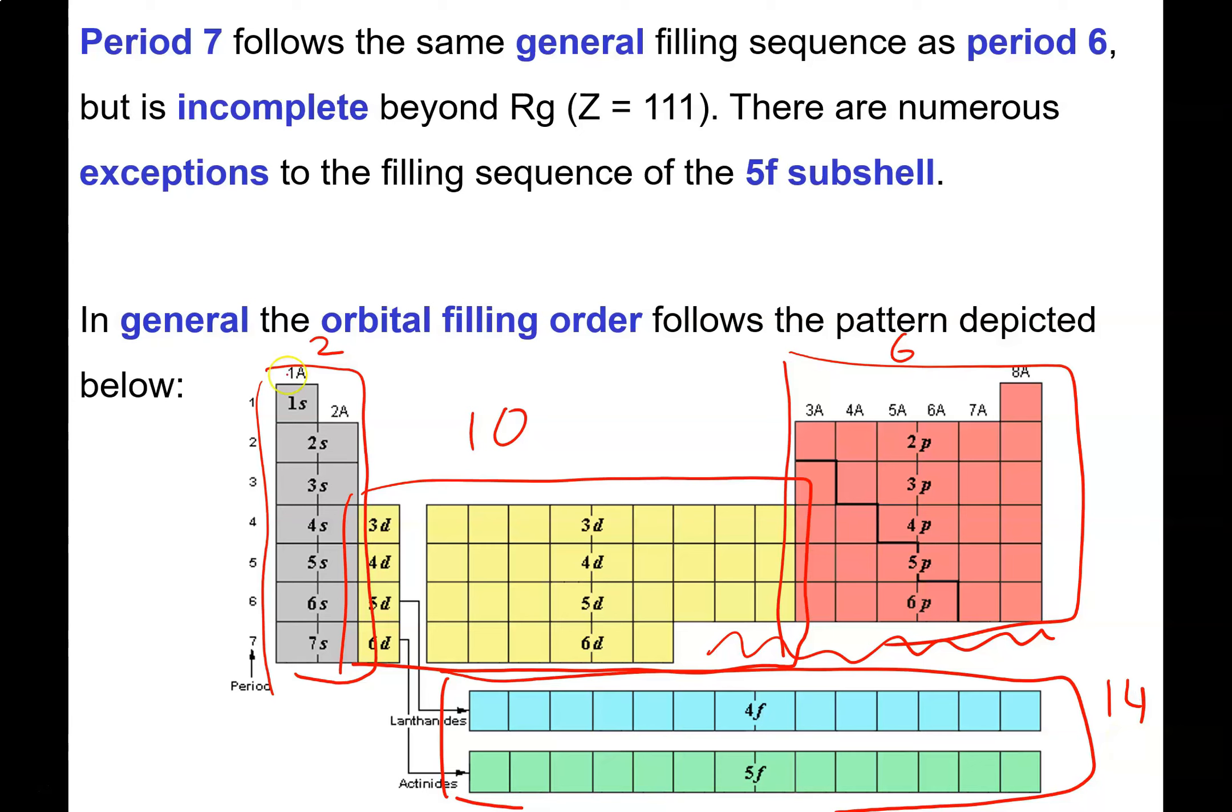As we move across this region of the periodic table, we call it the S block or S region, we're populating S subshells. As we move across here, we're populating P subshells. Through the middle, we're filling up D subshells. And then these two rows at the bottom that are 14 across, we're filling up the F subshells. You can actually count off an electron configuration from the periodic table.